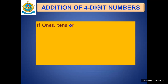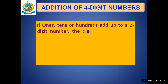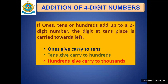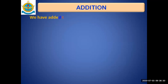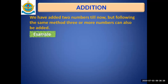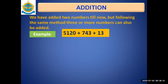If ones, tens, or hundreds add up to a two-digit number, the digit at the tens place of that sum is carried towards the left. If the sum of ones is two digits, ones give carry to tens. If the sum of tens is two digits, it gives carry to hundreds, and hundreds give carry to thousands. In previous lessons we studied regrouping ones, tens, and hundreds.